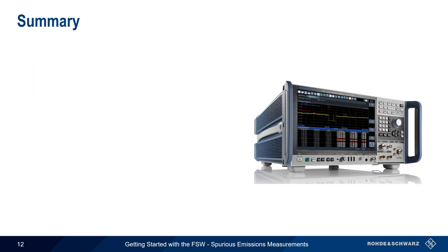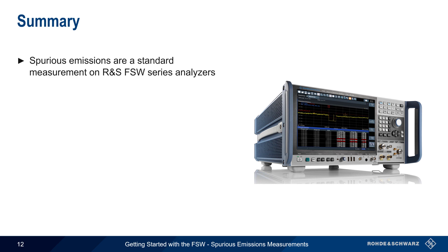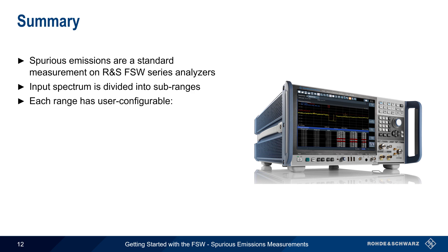Let's end with a brief summary. Spurious emission measurements are a standard measurement on Rohde & Schwarz FSW Series signal and spectrum analyzers. In most cases, the input spectrum is divided into user-defined sub-ranges, each of which has user-configurable measurement parameters such as resolution and video bandwidth. Each range can also have limit lines which indicate when a spurious emission, or spur, exceeds a defined threshold.